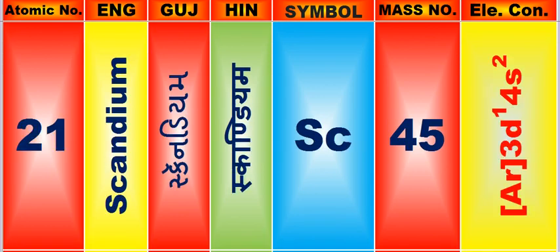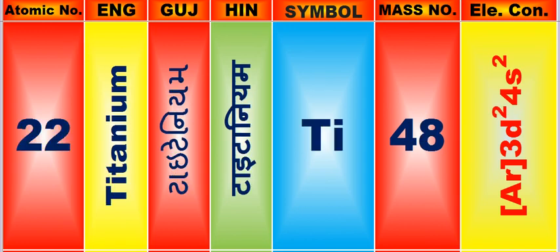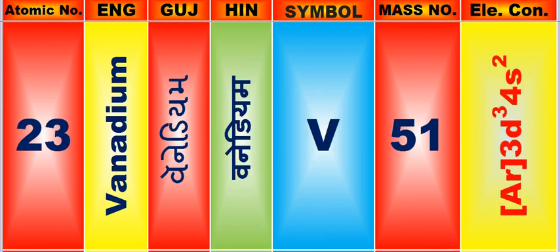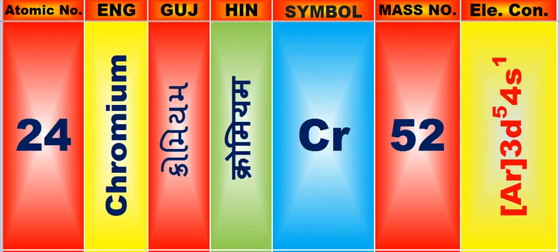Atomic number is 21, name of atom is Scandium. Atomic number is 22, name of atom is Titanium. Atomic number is 23, name of atom is Vanadium. Atomic number is 24, name of atom is Chromium.